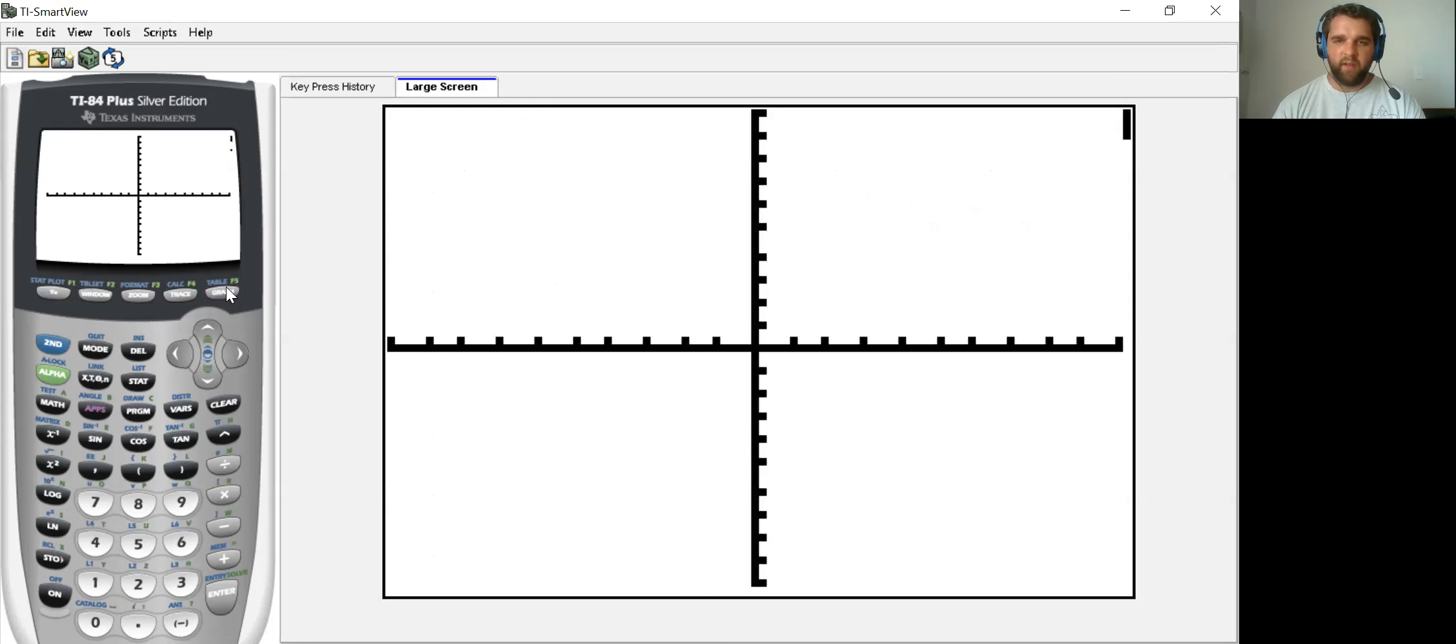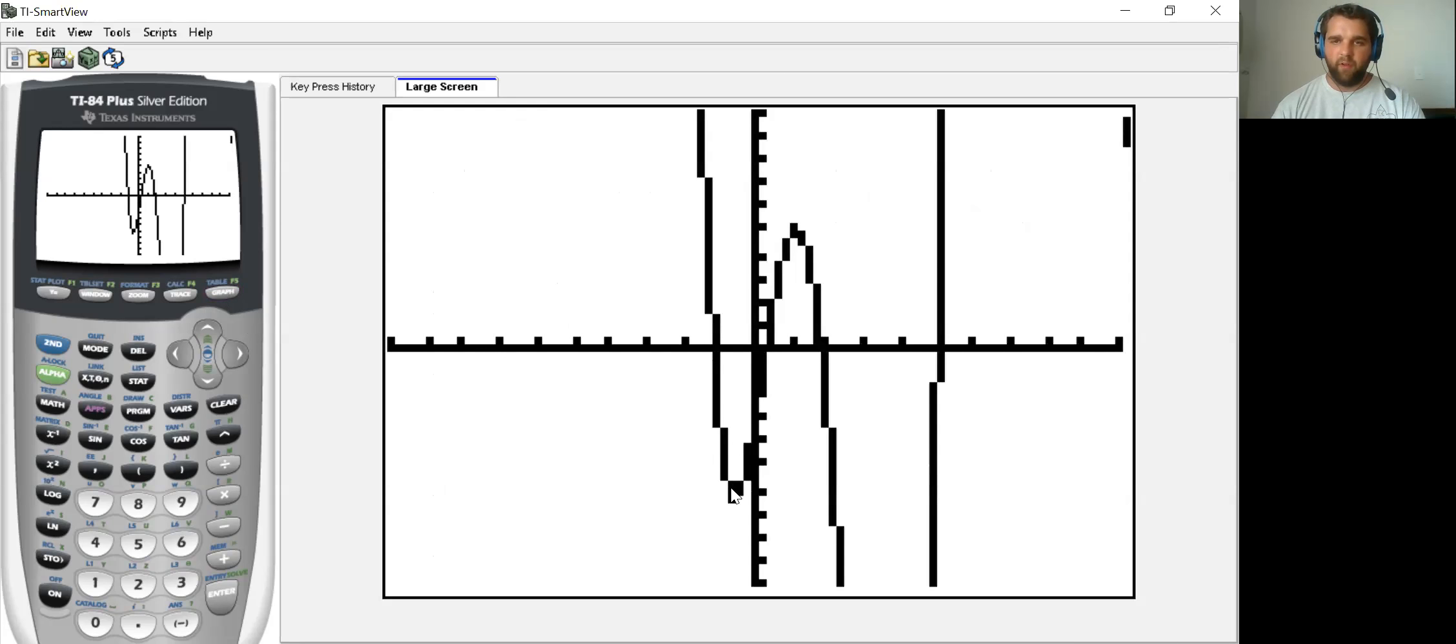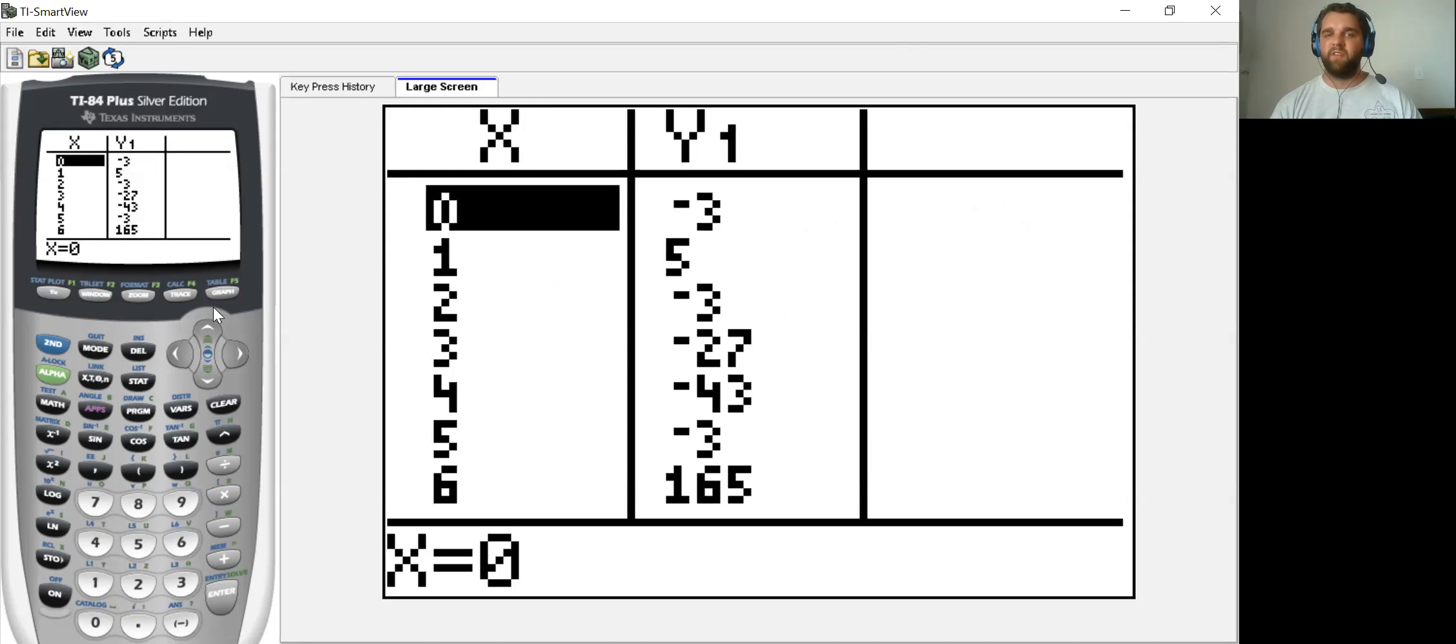And if I were to graph that quick, we have a local minimum, a local maximum, it looks like it drops back down and has another local minimum down here that's off the screen, and then it shoots back up. So if I were to try to graph this by hand, I'd use the table, plot those points, would probably have to shrink the table into another half step increments again.